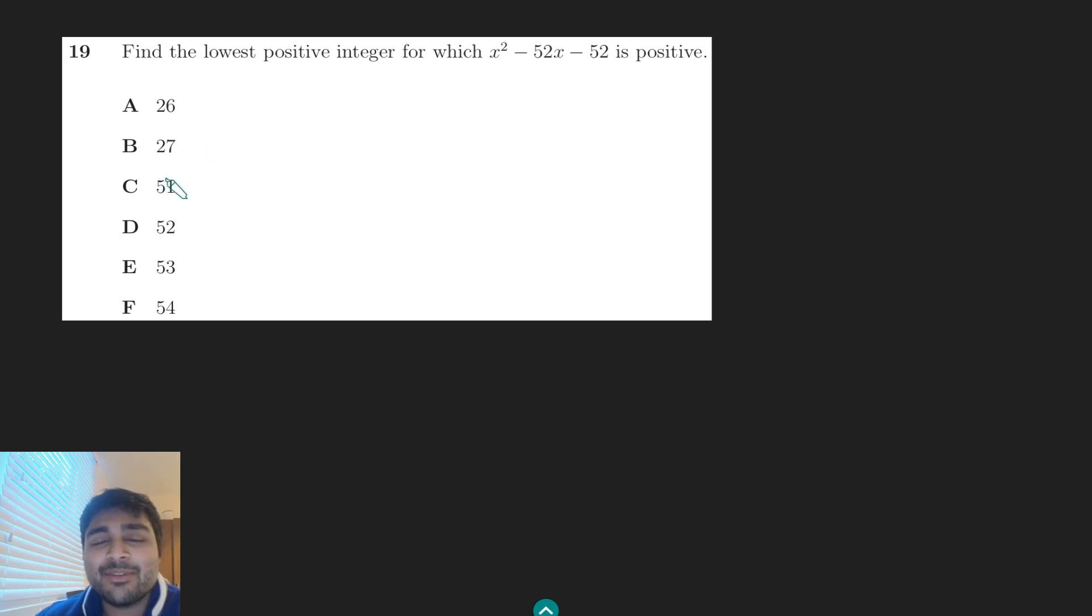This problem comes from the TMUA, which is an entrance exam used by multiple universities, but in particular Cambridge University for maths and economics. This question is the penultimate question from one of the past papers. We want to find the lowest positive integer for which x squared minus 52x minus 52 is positive, and we've been given six different options.